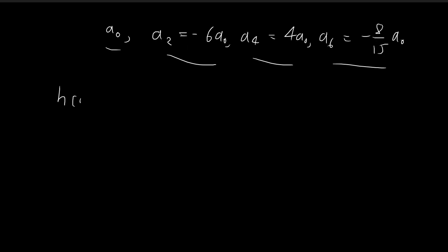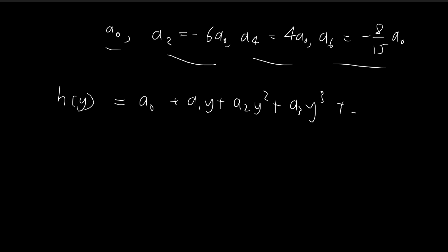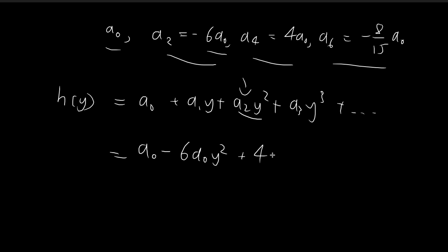This means that H of y, given by the infinite series, is actually just equal to A0 minus 6A0 y squared plus 4A0 y to the power of 4, minus 8 over 15 A0 y to the power of 6. The odd terms vanish since those constants are all zero.